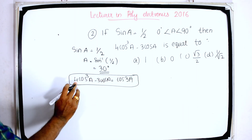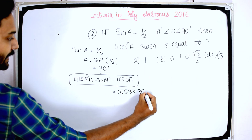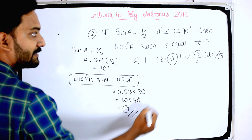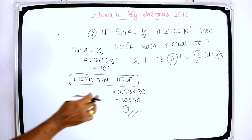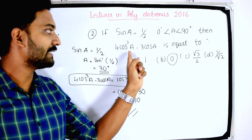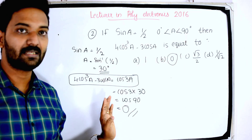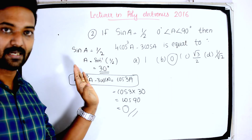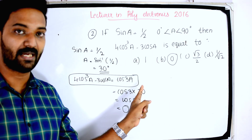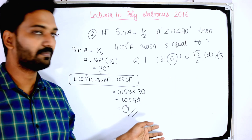So 4cos³a − 3cos a = cos 3a. Substituting a = 30°, we get cos(3 × 30°) = cos 90°. Cos 90° = 0. Therefore the answer is 0. We substitute the value of a into the formula 4cos³a − 3cos a to get the answer 0.